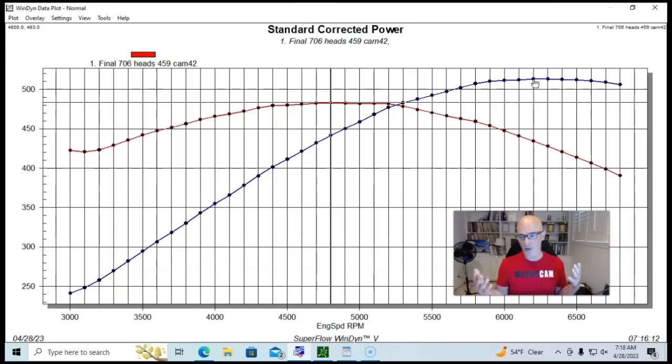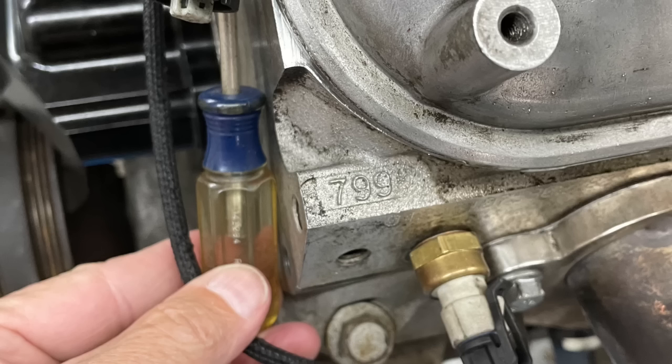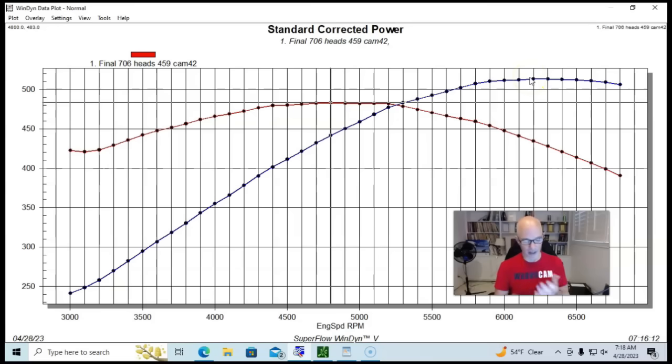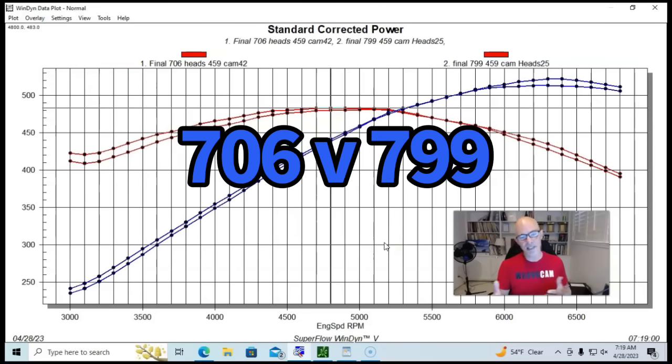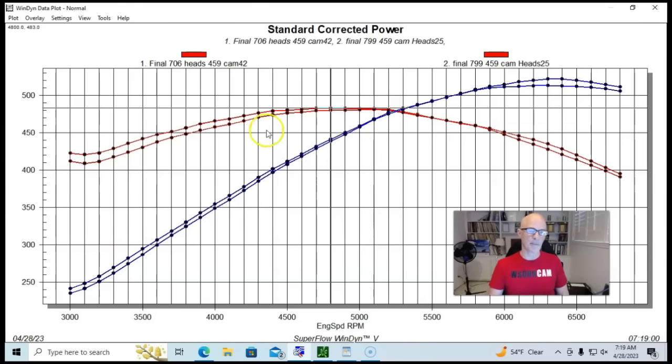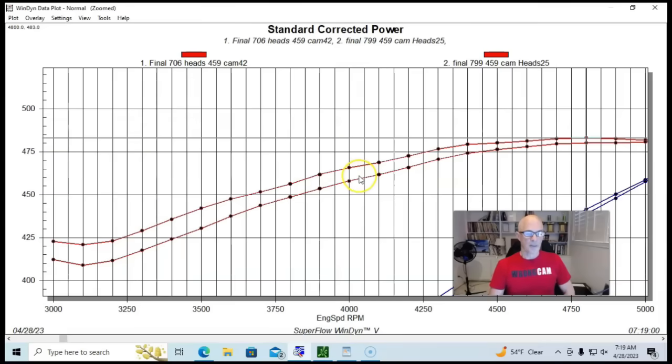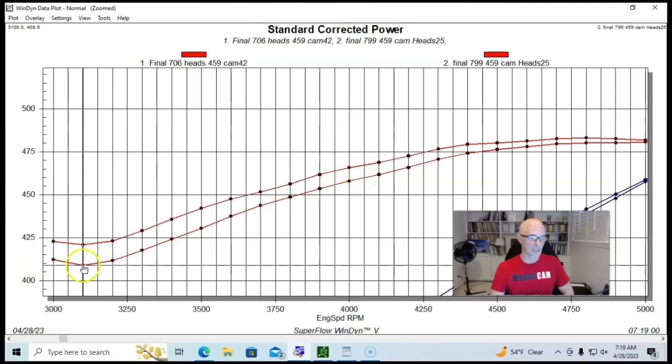But what we wanted to find out to begin with is how did these compare to the bigger actual 6-liter heads. And also they ran them on 5.3s and they may have even put them on the 4.8s later on the Gen 4 stuff. But let's take a look at our set of 799 heads. And you can see we're kind of splitting hairs here, up to 5,000 RPM, the 706 heads. I'm going to go ahead and zoom in here and show you.